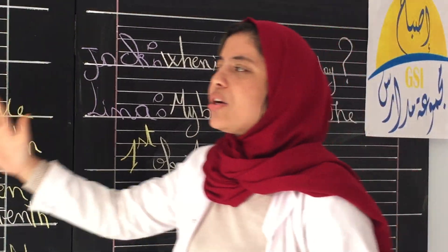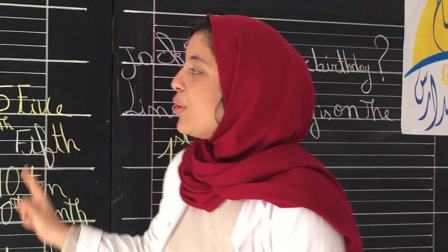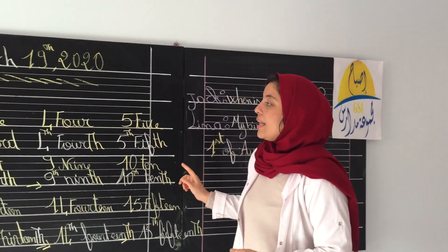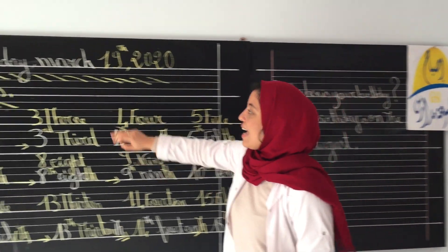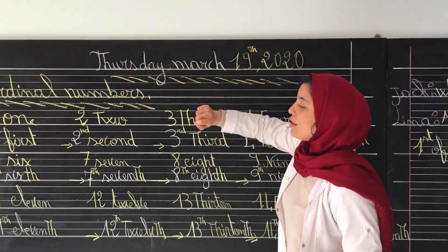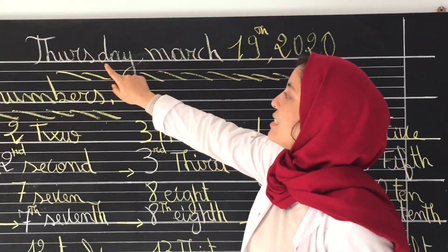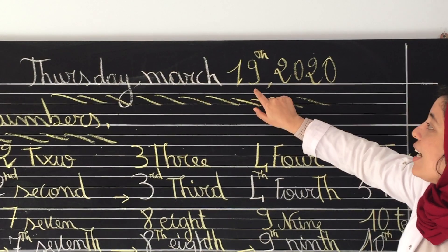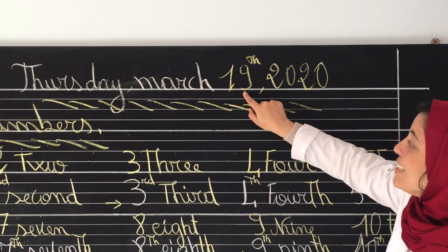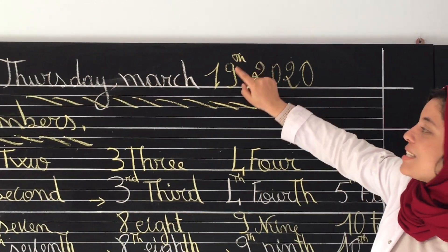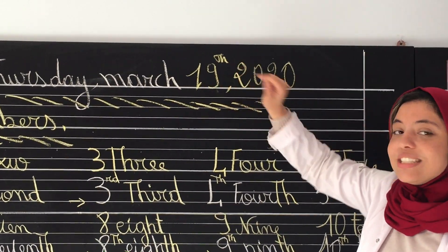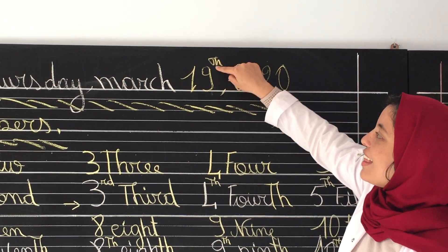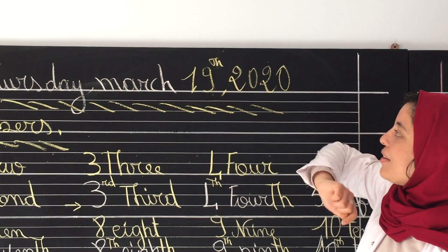So when do we use these ordinal numbers? We use ordinal numbers in dates. Like here, for example, today is Thursday, March 19th. So it is an ordinal number — that's why you have 'TH' written above the number.